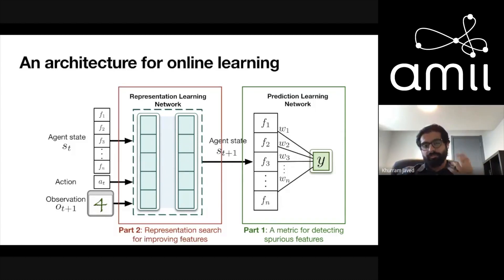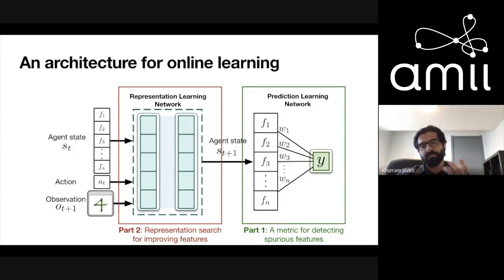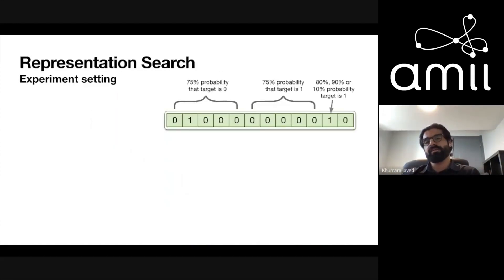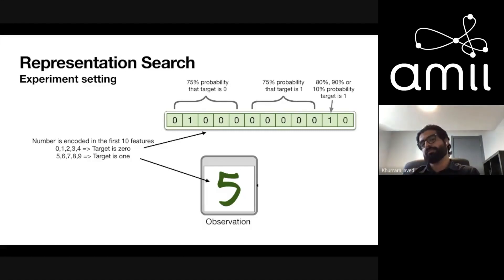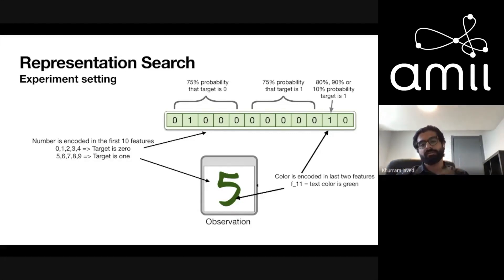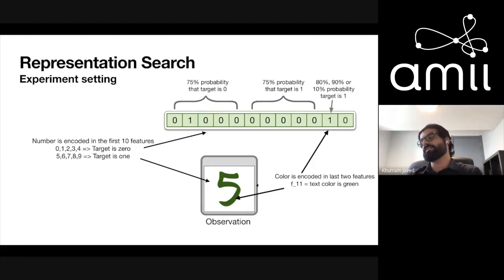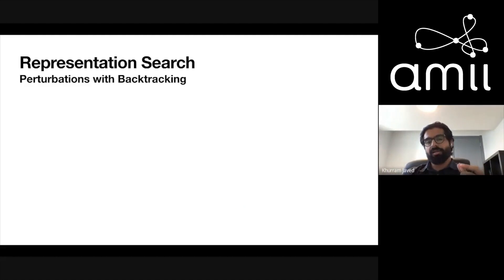The real problem is: how do you find good features? I'm going to propose a representation search method for improving features — this is very similar to generate and test. The experimental setting is the same as before, but instead of operating on the state space I operate on images that encode the same information. The digit in the image corresponds to which of the first 10 features is activated, and the color encodes the latent feature: green means 80/90/10% probability of target being 1. The agent no longer has access to the nice state space — it must operate on images, which are still Markovian, though the method would work in non-Markovian cases.